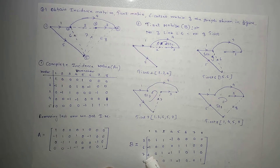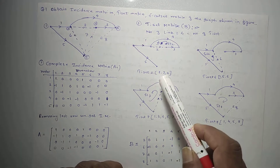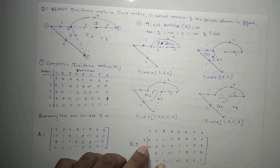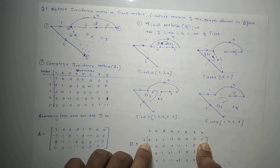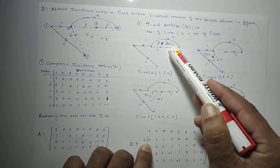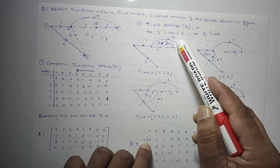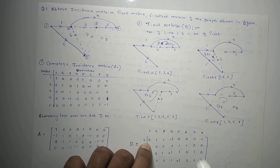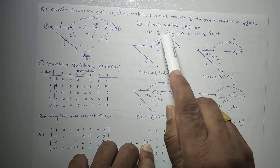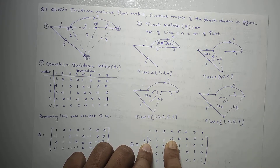Now write the tie-set matrix, which is a matrix of branches versus tie sets. There are 8 branches and 4 tie sets. For tie set 2, formed by branches 2, 3, and 4, place 1s at those positions and 0s elsewhere. The link current direction in a loop is always positive. For tie set 2, branches 2 and 3 are in the same direction as the link current — positive — while branch 4 is opposite, so it is negative.